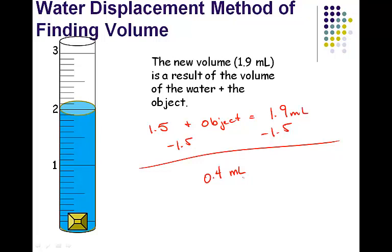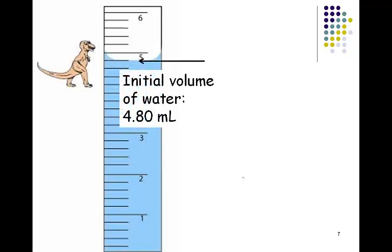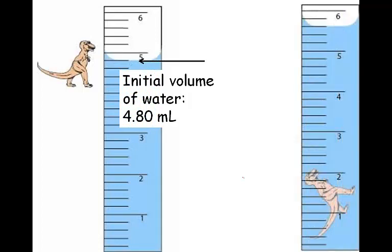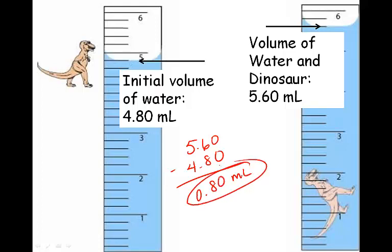Let's take a look at another example. We want to measure the volume of a toy dinosaur. We can't measure the length, width, and height, so we need to use Archimedes' principle — the volume displacement method. We take an initial reading of the water, which is about 4.80 milliliters. When we place the dinosaur into the water, the water level rises from 4.80 milliliters to 5.60 milliliters. To determine the volume of the dinosaur, we take 5.60 and subtract 4.80, giving a volume of 0.80 milliliters.